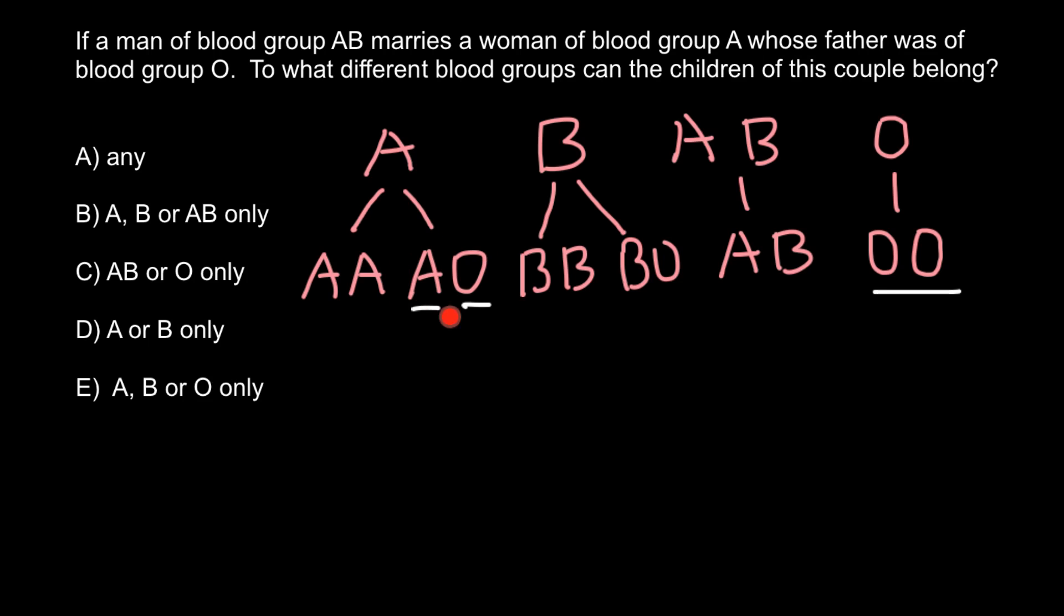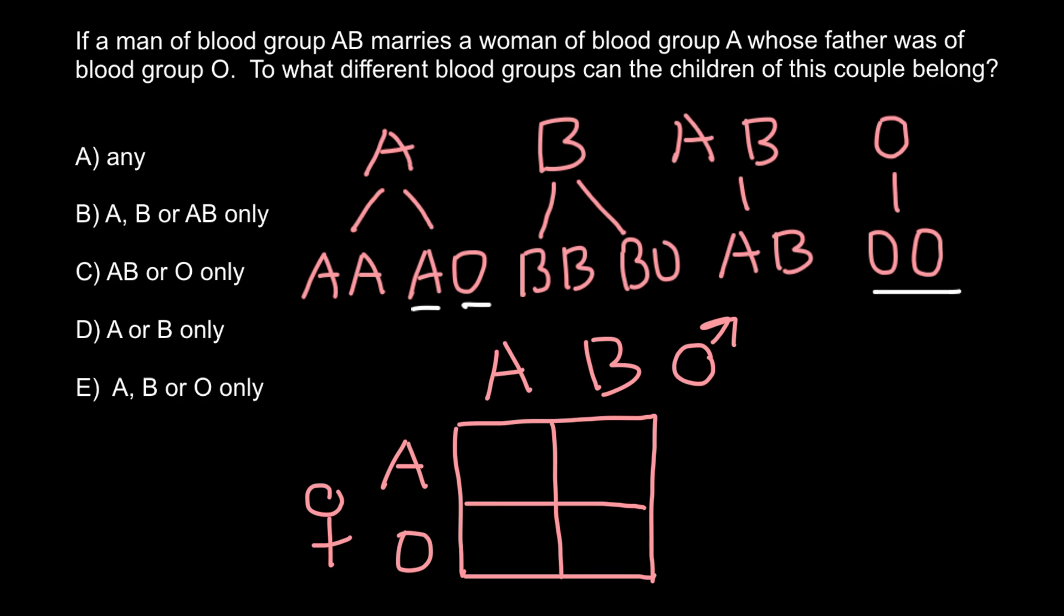Now when we know the genotype of the female, we can predict what are the possible genotypes in their progeny. We know that the male's genotype is AB. Now when we build a Punnett square we can find all the possible genotypes in their progeny. This is the male side and this side is female. We know that her genotype is AO.